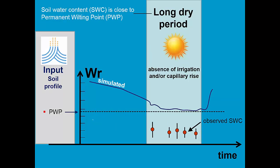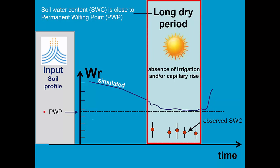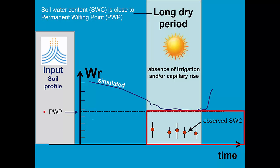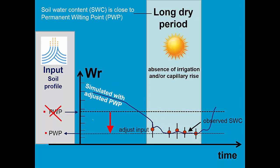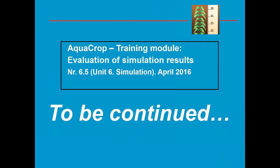Similarly, during a long dry period and in the absence of irrigation or capillary rise, the water content in the root zone is heading toward wilting point. If the observed data is far below the simulated data, then the value of the permanent wilting point in the soil file is not correct. By adjusting that value and running the simulations again, we can get a good match between observed and simulated water content.